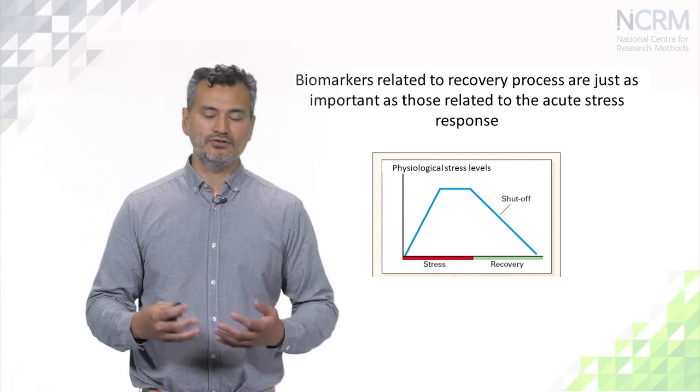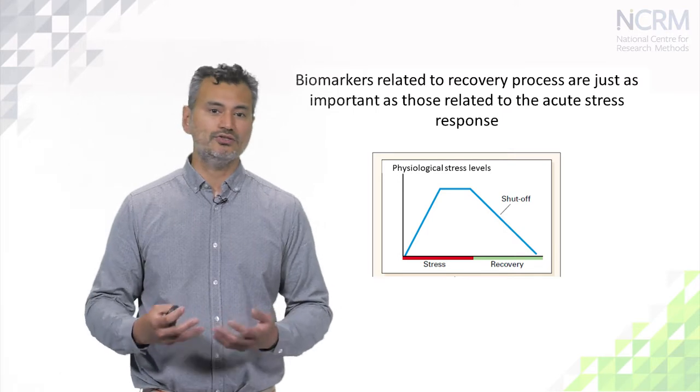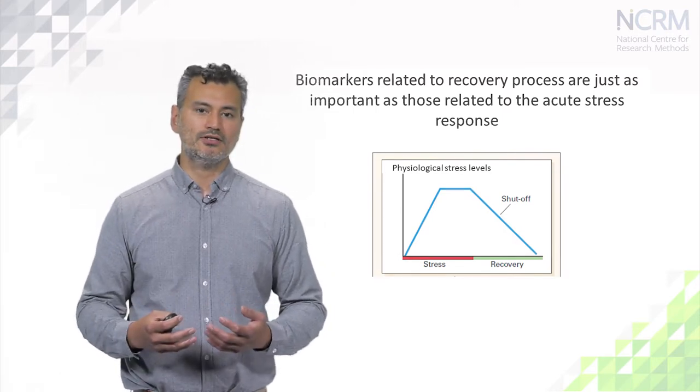Biomarkers have also been used to measure how people grow, develop, and change over the life course. There are a number of biomarkers useful for measuring life course developmental processes. For example, high levels of growth hormone or testosterone in early life might be indicative of one kind of process that may mean something very different when those same hormones are elevated in later life. So it's important to keep in mind the stage of the life course when particular biomarkers are measured, because they carry different implications and meanings.